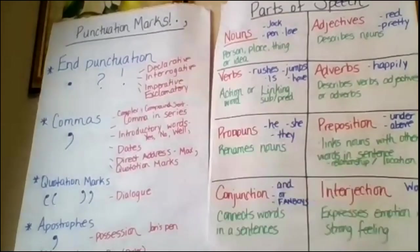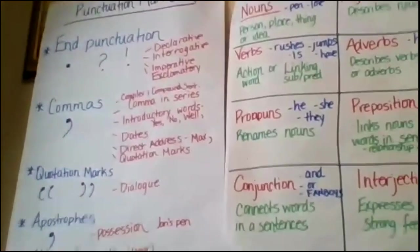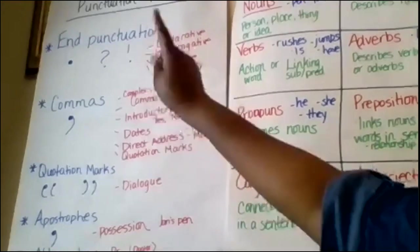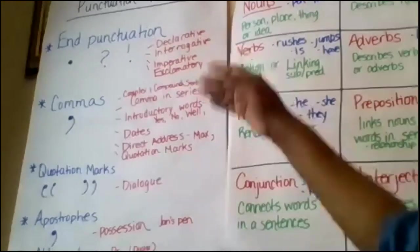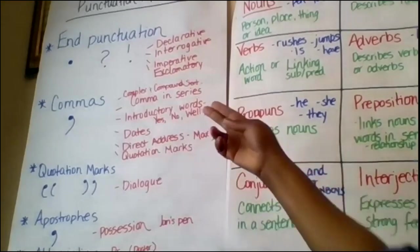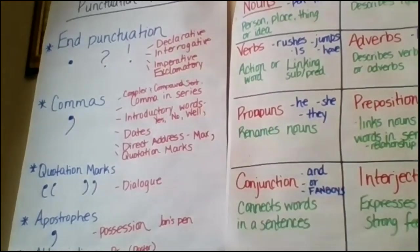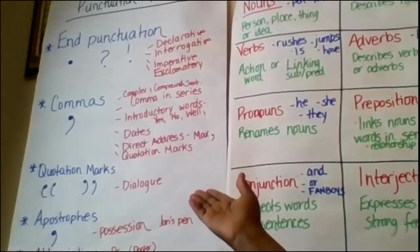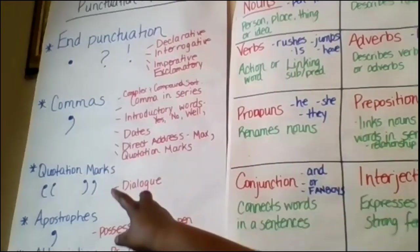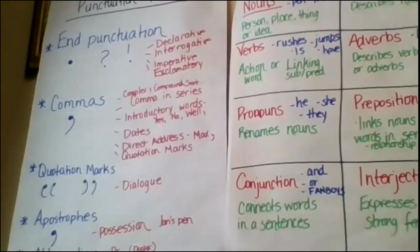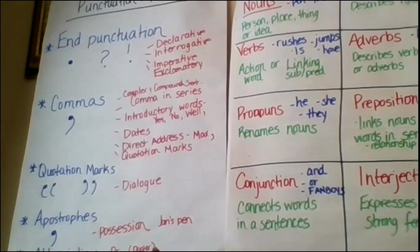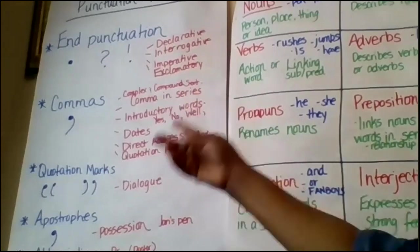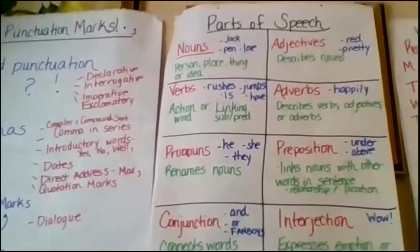Last week we covered punctuation marks. We looked at end punctuation — the period, the question mark, and the exclamation mark. We looked at commas and all their uses: compounding complex sentences, commas in a series, introductory words like yes, no, or well, commas in dates, and commas in direct address. We also covered quotation marks used with dialogue, apostrophes for possessives and abbreviations — for example, 'Dr.' with a capital D-R and a period.